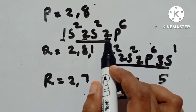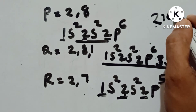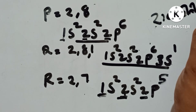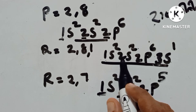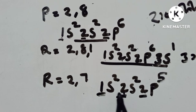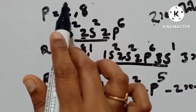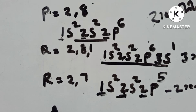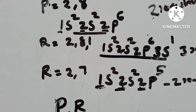Then we have this period, and this period is a random period. This is 3 and this is 2. Then we have this random period. This is one period. This is P and R. P and R are in one period.